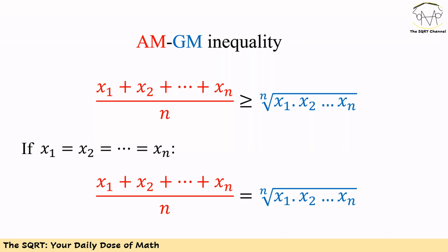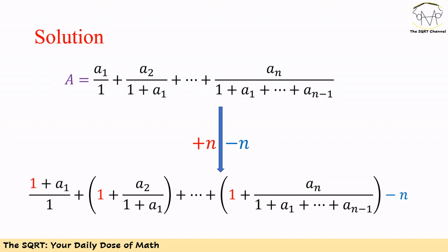To solve this problem we are going to use the AM-GM inequality. For x1 up to xn, the arithmetic mean AM equals x1 plus x2 up to xn over n, and the geometric mean GM equals the nth root of x1 times x2 up to xn. Equality happens when x1 equals x2 up to xn.